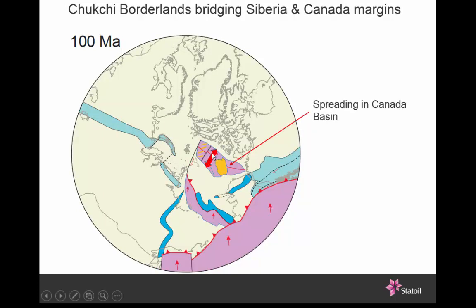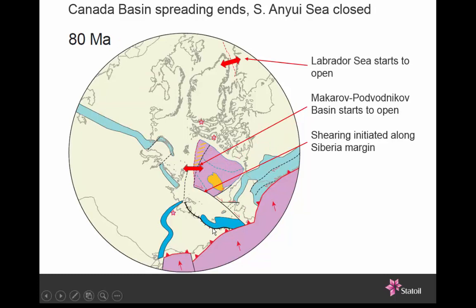This is the Canada Basin opening. This little microcontinental chunk — the Chukchi Borderlands — is rotating counter to the Canada Basin opening as that happens. We can see the South Anuiy Embayment closing and the subduction zone consolidating along the Pacific margin. The next stage: the embayment is now completely closed and sutured, forming the Chukotka Fold Belt. Now the Makarov Basin is opening, linking up with the Labrador Sea opening — orthogonal to the previous movement, a complete 90-degree change in plate vector.